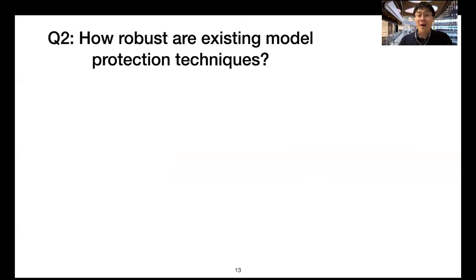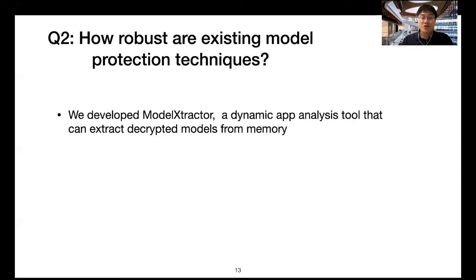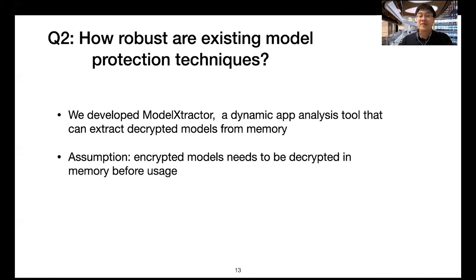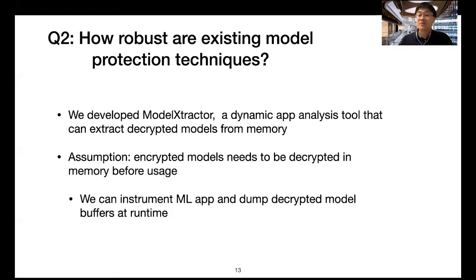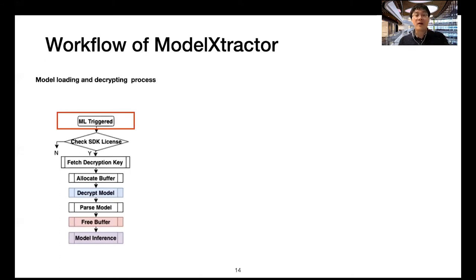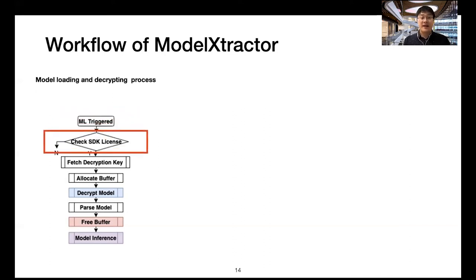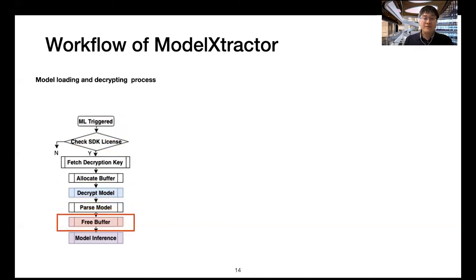Question 2: how robust are existing model protection techniques? We developed a tool called Model Extractor that can extract decrypted models from memory. Our assumption is that encrypted models need to be decrypted in memory before usage, so we can instrument the machine learning app and dump the decrypted model buffers at runtime. For a typical machine learning app, when ML functionality is triggered, it first checks the SDK license, then fetches the decryption key, allocates a buffer, decrypts the model, parses it, frees the model buffer, and starts model inference.